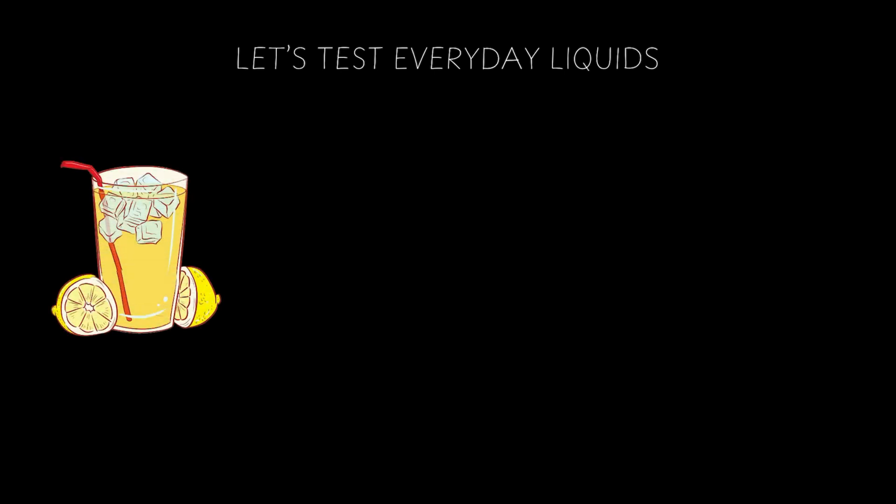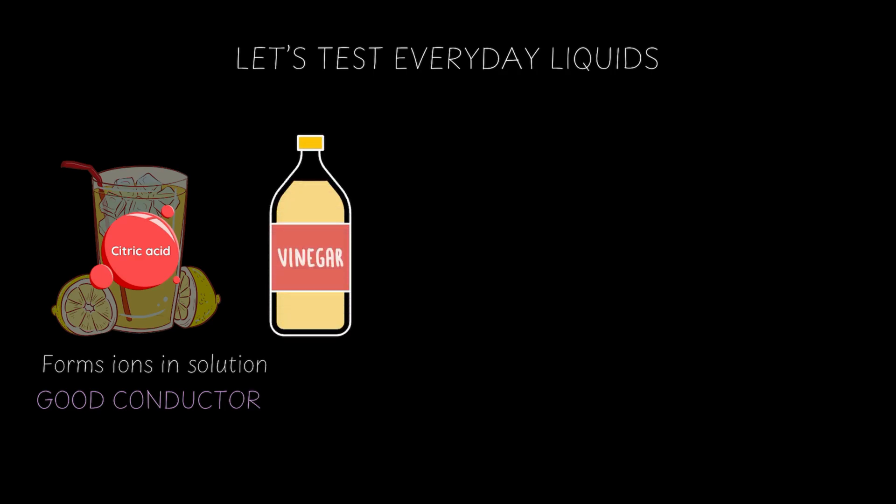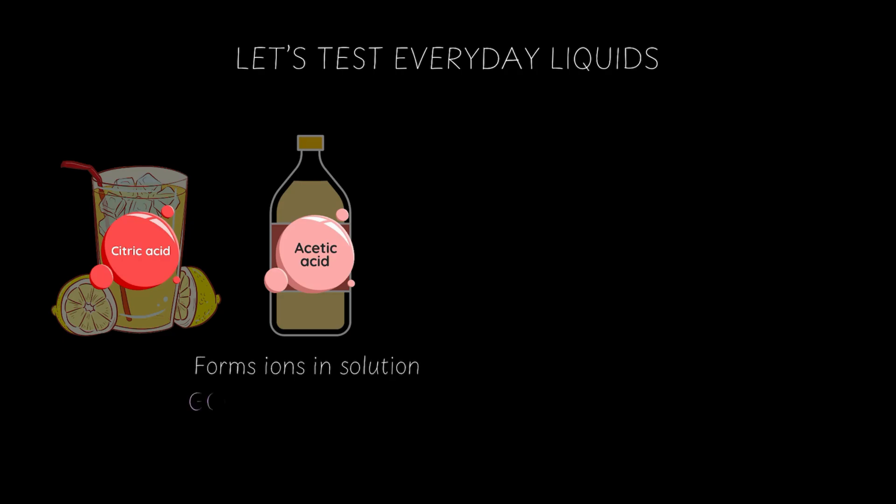First, let's start with lemon juice. Lemon juice contains citric acid and that forms ions in solution. Therefore, it's a good conductor. Second, let's talk about vinegar. Vinegar has acetic acid. Again, forms ions in solution and therefore it's a good conductor.